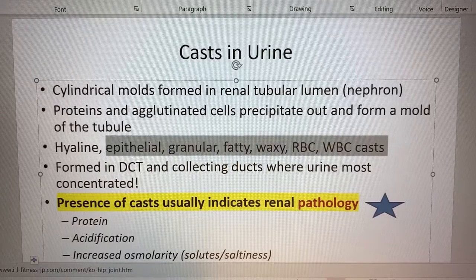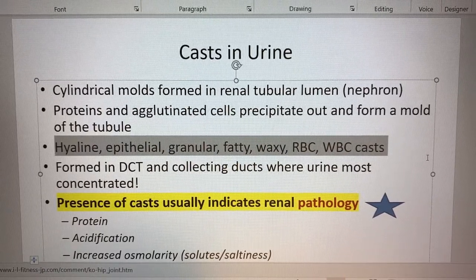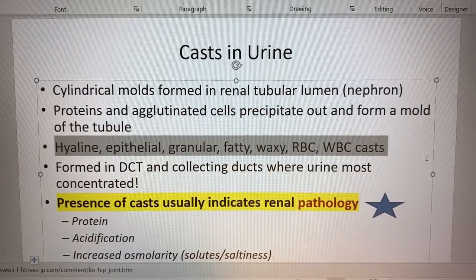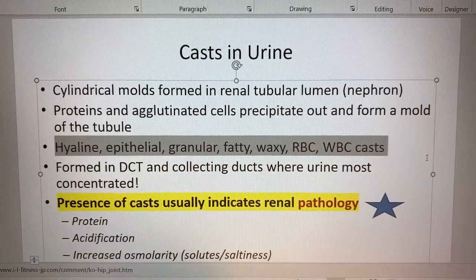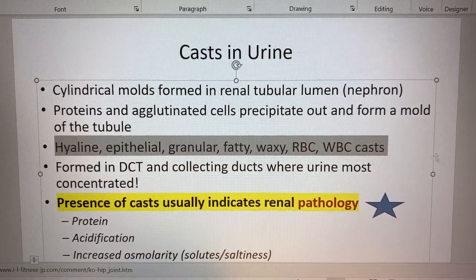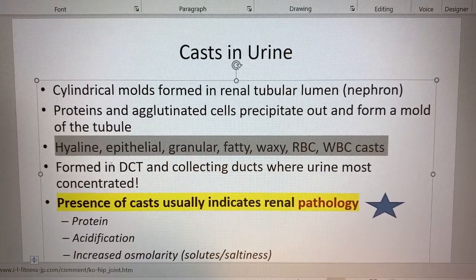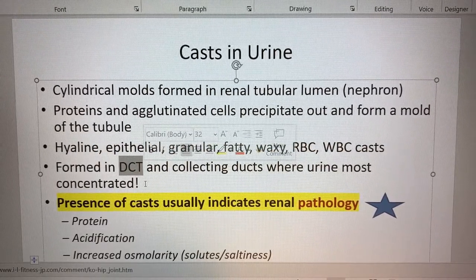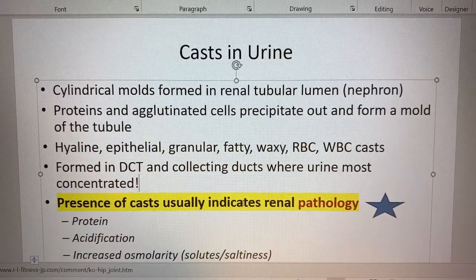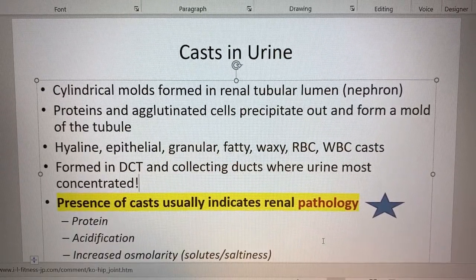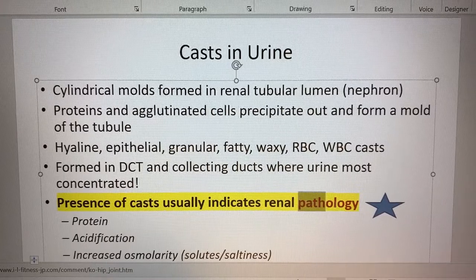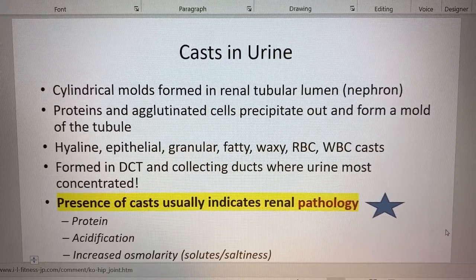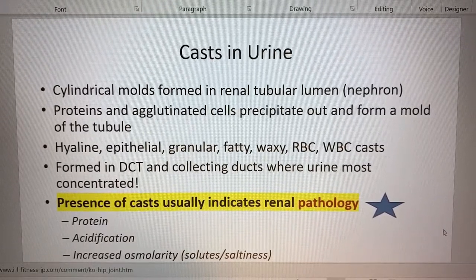There's lots of different things that could form casts - different types of cells, hyaline, epithelial, all the way down to red blood cells and white blood cells. They're formed in the distal convoluted tubule and the collecting ducts where most of the urine is concentrated. The presence of these casts usually indicates a pathology, a bad thing. We don't want to see casts in the urine sample.